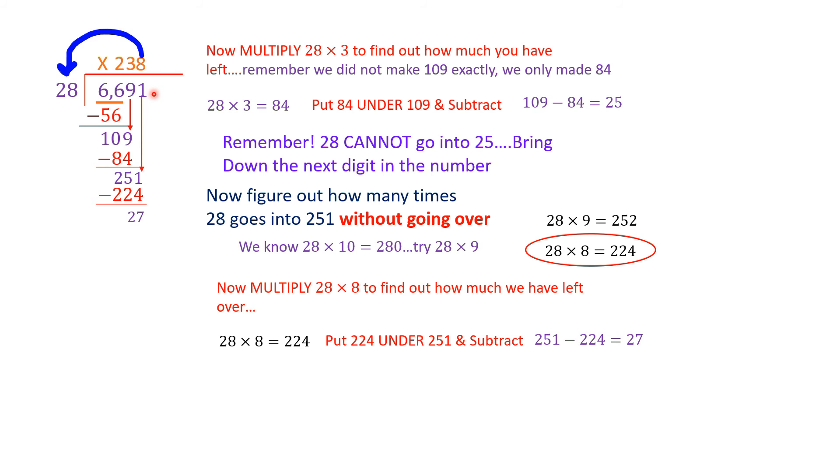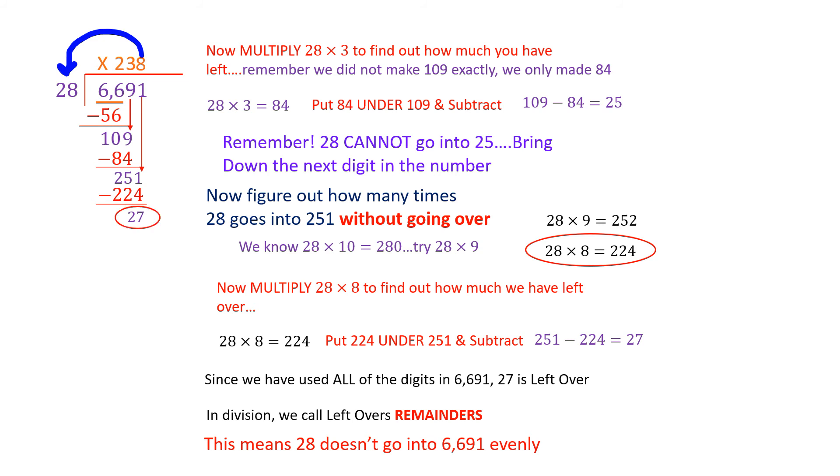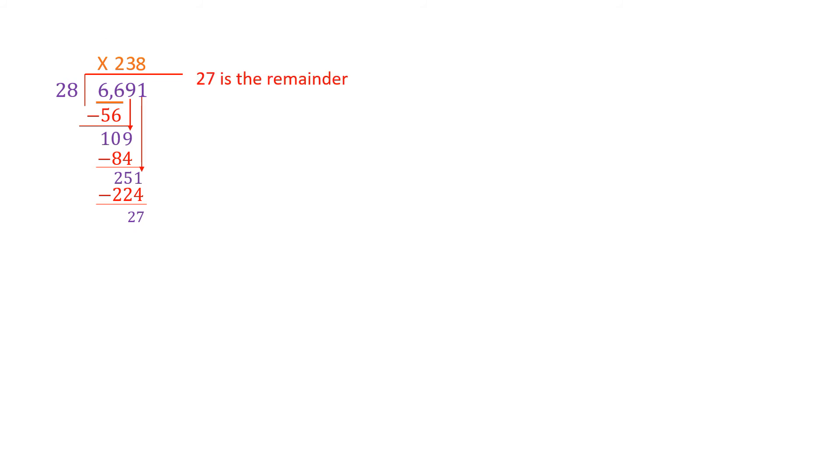Now we don't have any numbers left to take. There's no digits left in 6,691. So we have used all the digits. So 27 is literally left over. It's not going to go anywhere. 28 does not go evenly into 6,691. I could make 238 groups of 28 out of 6,691, but I would have leftovers. So in division, we call leftovers remainders. 28 doesn't go into this 6,691 evenly. There's 27 left over. So that 27, we have to do something with it. It's a remainder and we can do one of two things with it.